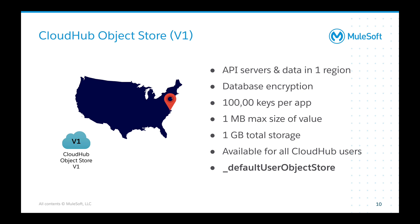The max size of a value was limited to one megabyte, so if you had a 10 megabyte file you wanted to store, you would have to chunk it into one-megabyte pieces. You were also limited to one gigabyte total storage for the entire application. It was available to all CloudHub users, and there was no transactions-per-second limitation.